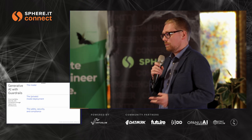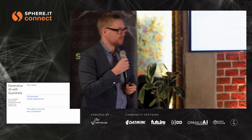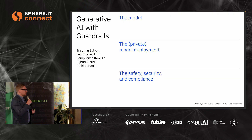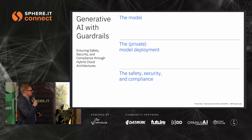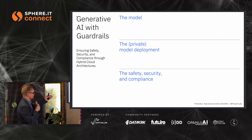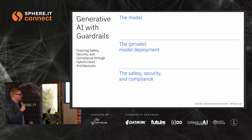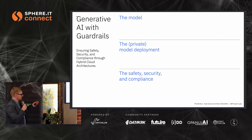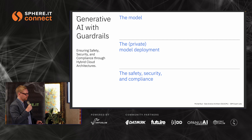To make your application ready for the production environment, you might think about improving three areas. First, the model. Second, the private model deployment. And the third area will be safety, security, and compliance.